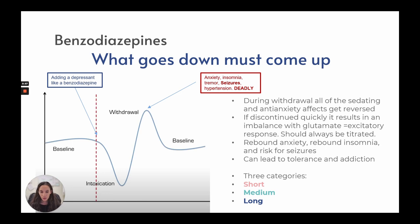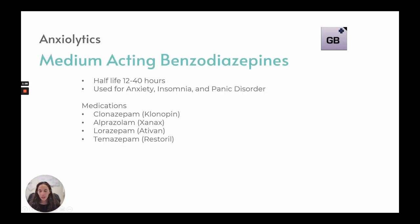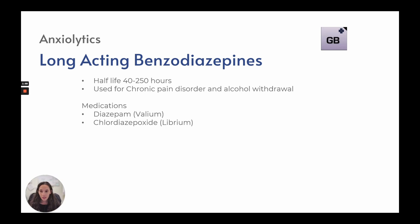There are three categories of benzodiazepines. Short-acting have a half-life of 1 to 12 hours and are used for panic attacks and status epilepticus — including triazolam, oxazepam, and Versed. Medium-acting have a half-life of 12 to 40 hours and are used for anxiety, insomnia, and panic disorders — including Klonopin, Xanax, Ativan, and Restoril. Long-acting have a half-life of 40 to 250 hours and are used for chronic pain disorders and alcohol withdrawal — including Valium and Librium.